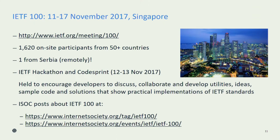If you're interested in finding out what happened, in the Deploy 360 program we write about what's happening in some of the working groups — particularly the things relevant to the Deploy 360 program, so things like IPv6, DNSSEC, and TLS. We do a preview and then a review of what's happened, so you can read about it at the provided URL.